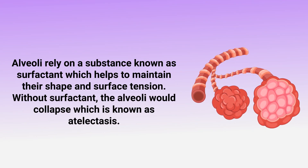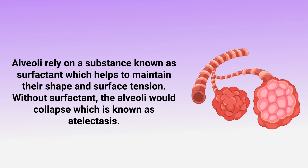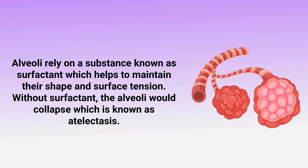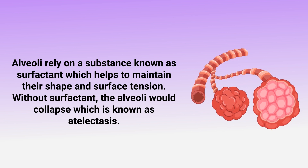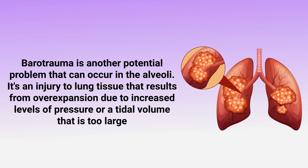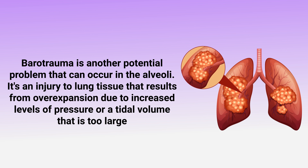Alveoli rely on a substance known as surfactant, which helps to maintain their shape and surface tension. Without surfactant, the alveoli would collapse, which is known as atelectasis. Barotrauma is another potential problem that can occur in the alveoli — it's an injury to lung tissue that results from over-expansion due to increased levels of pressure or a tidal volume that is too large.